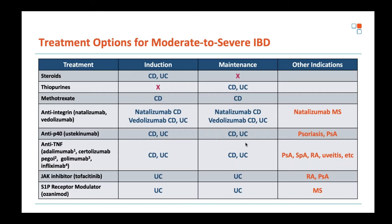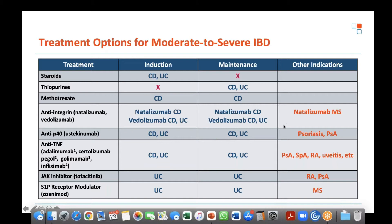There are more and more licensed drugs we're familiar with. Ozanimod, the first S1P receptor modulator, is now licensed for ulcerative colitis in the USA, and we're expecting other drugs to follow. Outside of inflammatory bowel disease, many of these agents also have licensed indications for other autoimmune diseases.